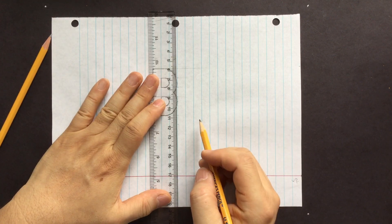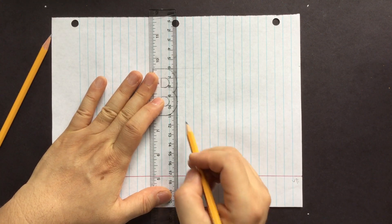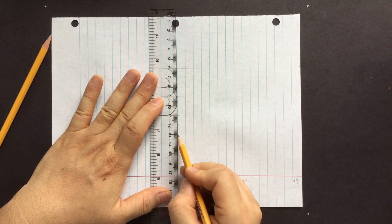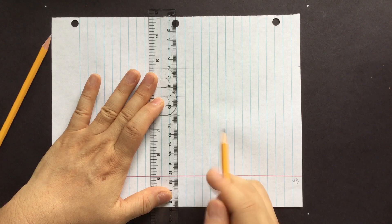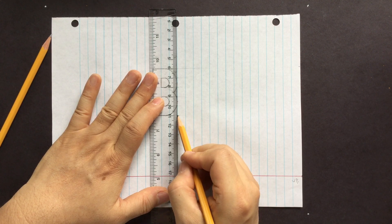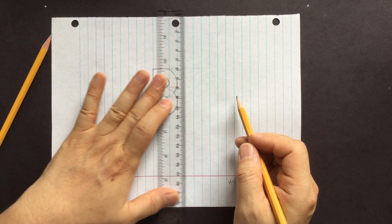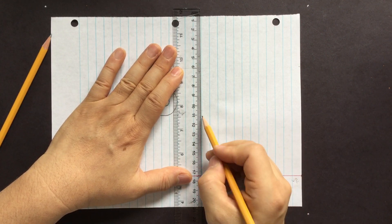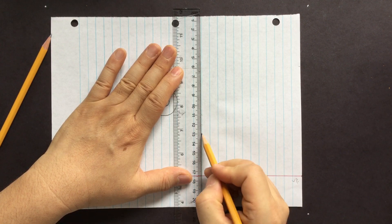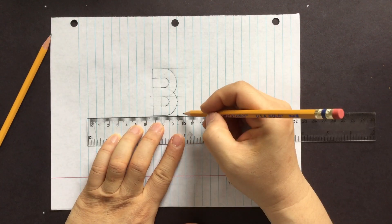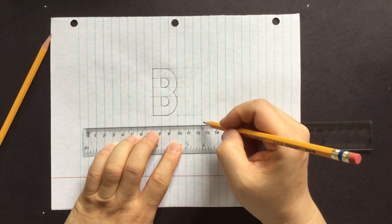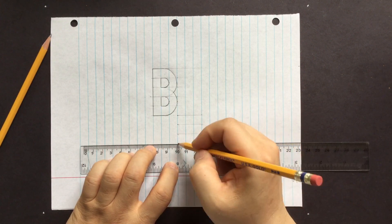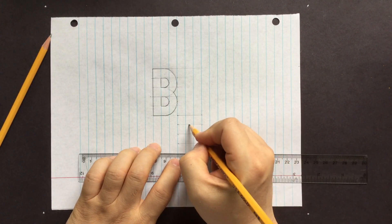And we're going to continue with the circle. One, two, three, four. So this is half. One, two, three, four. And then center.